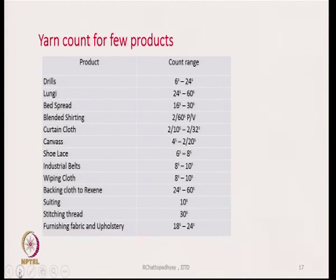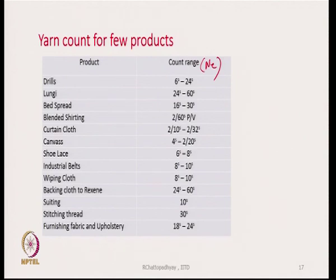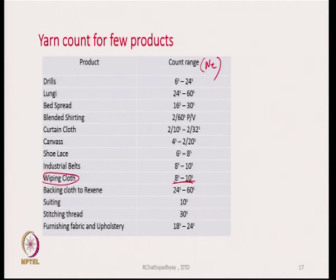The yarn counts used for different types of products vary. A table states some products and their corresponding count ranges in the NE system. Products listed include drills, lungi, bedspread, blended shirting, cotton cloth, and others. This is useful from a design perspective — for example, if you want to produce a wiping cloth, you must know what yarn counts are generally used to produce it.